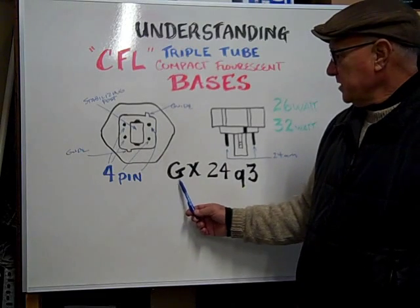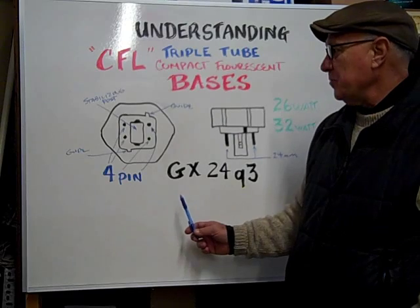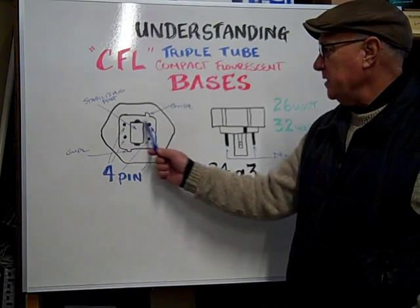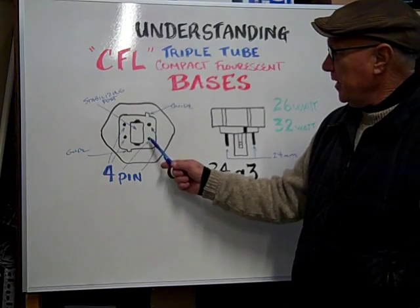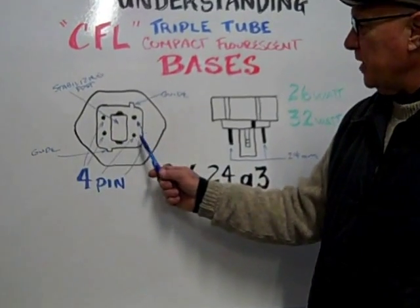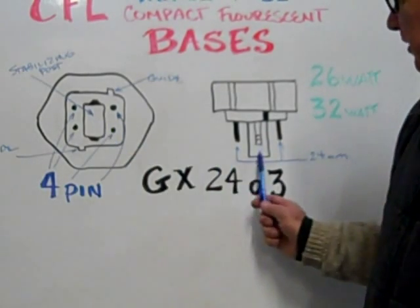One we're discussing is the GX24Q3 compact fluorescent base. It has four pins and triple tubes. The pins are in a square configuration on the base around the stabilizing post in the center.